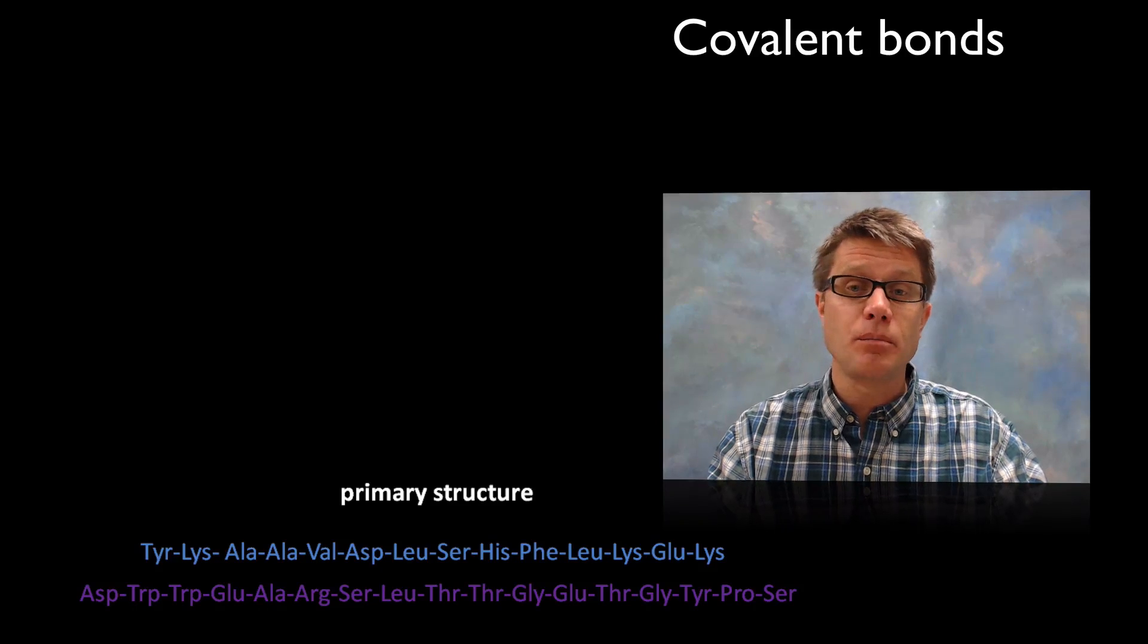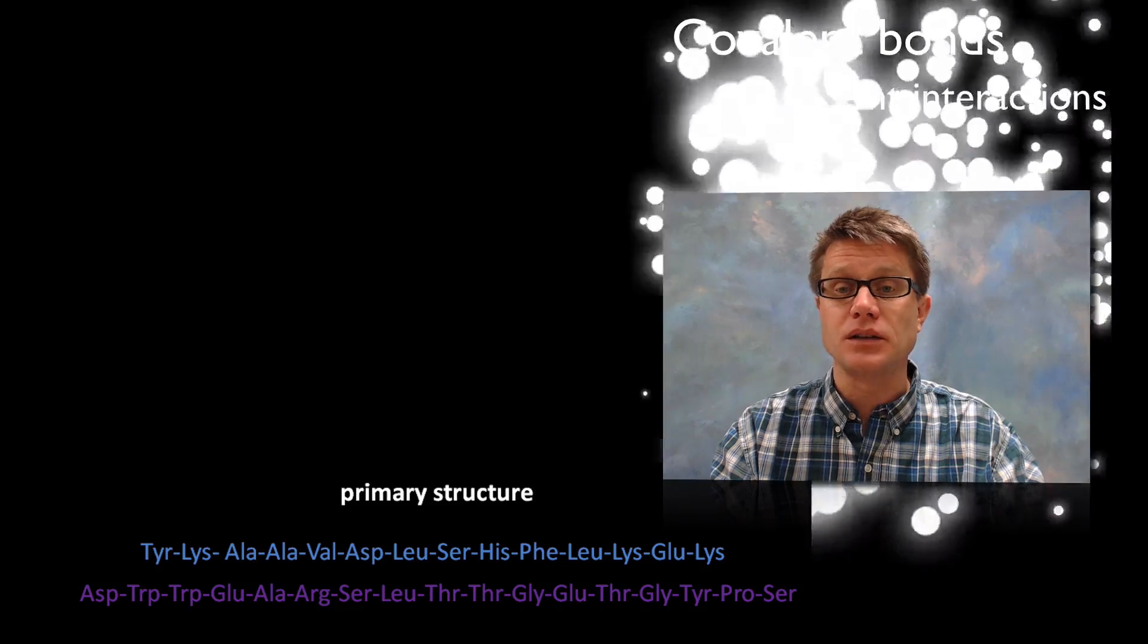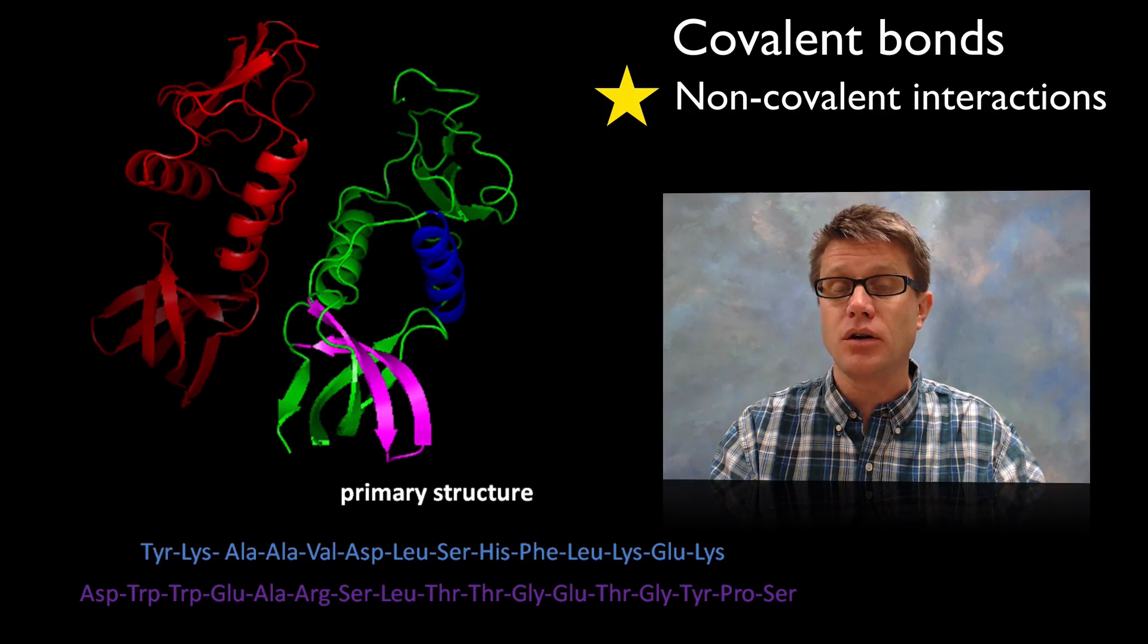Likewise if we were to take this simple polypeptide as all these amino acids come out and just look at the covalent bonds it doesn't give us that structure of that overall protein.